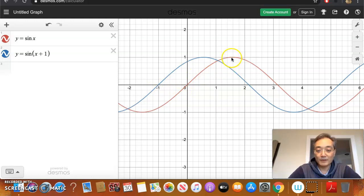Likewise, this maximum point here was also shifted 1 unit to the left. So every point on sine of x has now been shifted 1 unit to the left. Is that clear, folks? So this, again, is a very simple example of a horizontal shift.